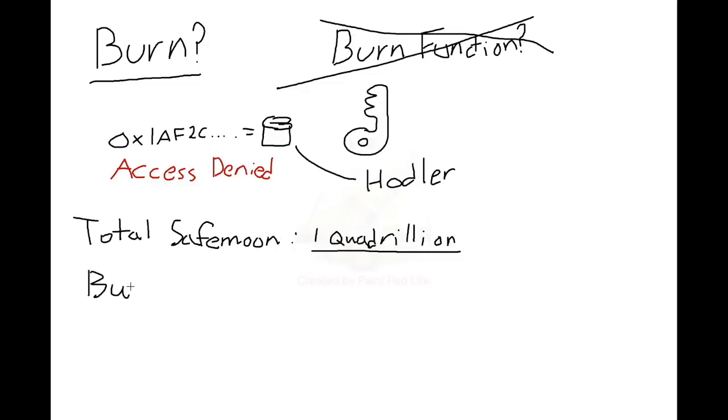How much of a share? Right now, almost half. At the time of making this video, the burn wallet has 416 trillion tokens in it, which is 41.6% of the entire supply of one quadrillion SafeMoon. Since the burn wallet owns 41.6% of the supply, it will eat, burn, whatever you want to call it, 41.6% of our reflections, or $2.08 out of that $5 that was split up off of Alice's gift to Bob.